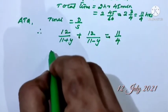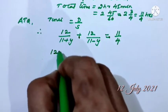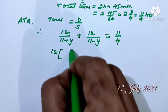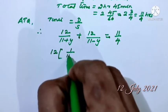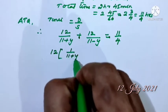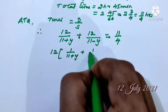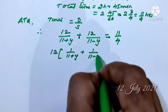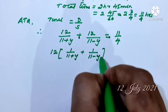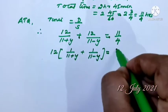Taking 12 as common: 12 times [1 by (11 plus y) plus 1 by (11 minus y)] equals 11 by 4.